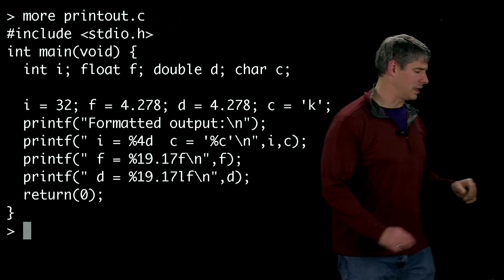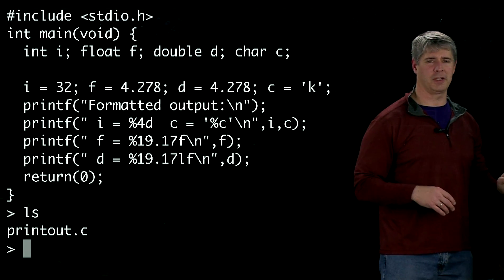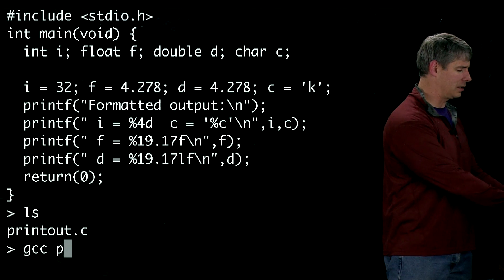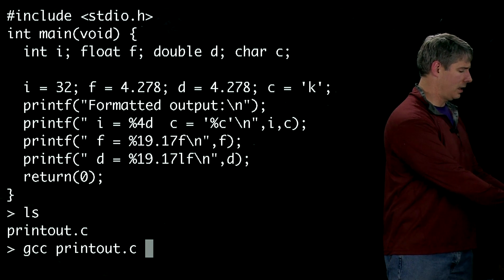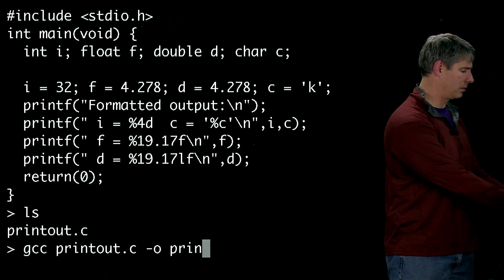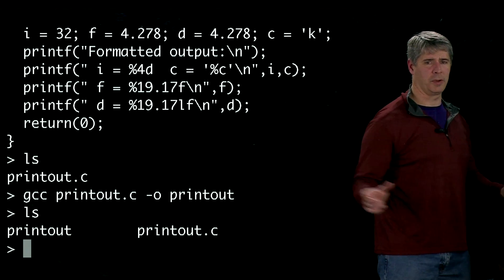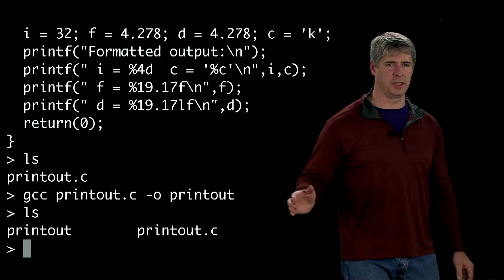So let's go ahead and take a look at what's in the directory here. So far all we have is printout.c in our directory, so we're going to compile that and send it to an output executable called printout. And if we look at our directory again, we see we have two files now, the executable and the original source code.